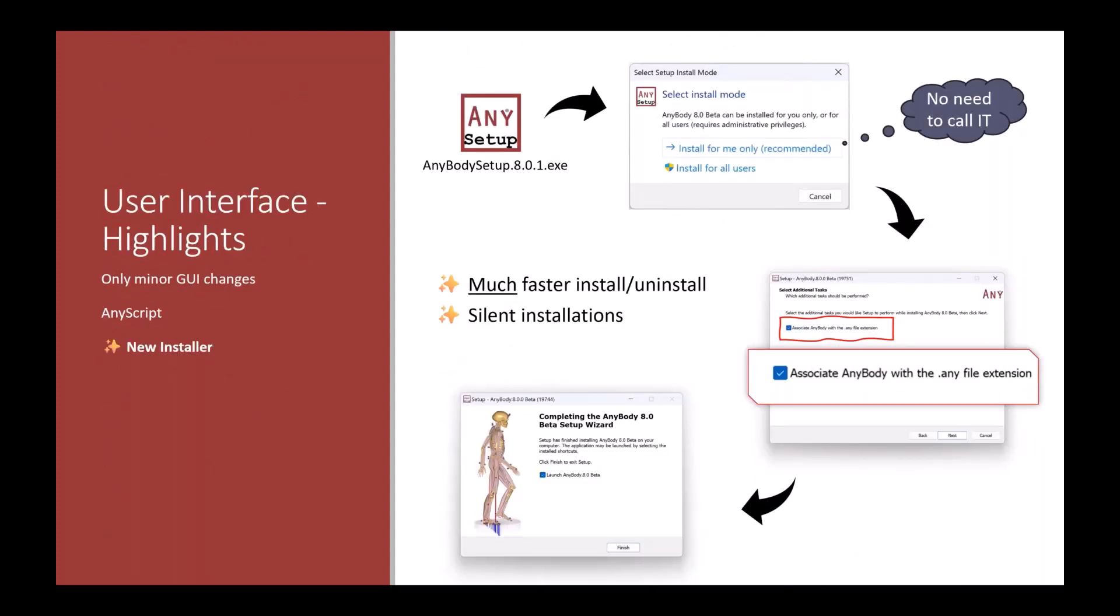Another new thing you might notice when you install AnyBody is that it comes with a completely new installer. It's not only much smaller when you download it, but it also supports non-admin installs of AnyBody. You can install it for just your user and you don't need admin rights. For many corporate users, that can be a huge relief. When you install, you can also select whether you want to associate any script files with it or not. The installer is just much faster and it supports silent installations.